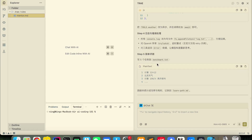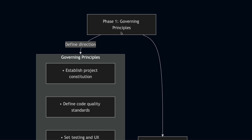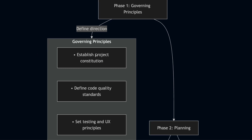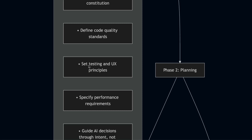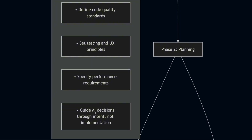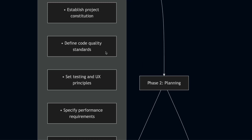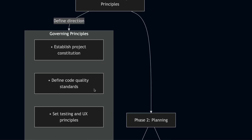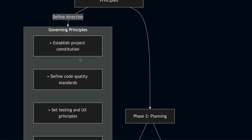You start by establishing what are called governing principles for your project. Think of this as your project constitution. You define things like what matters most for code quality, what your testing standards should be, how you want the user experience to feel, and what kind of performance requirements you have. These principles actively guide every decision the AI makes throughout the development process.